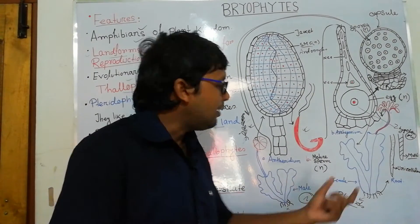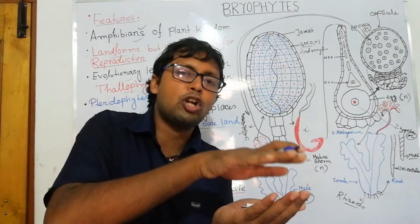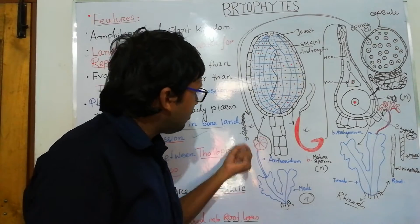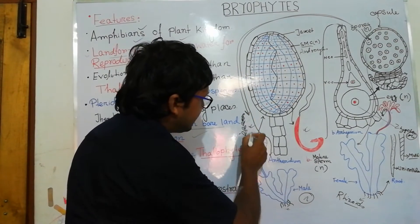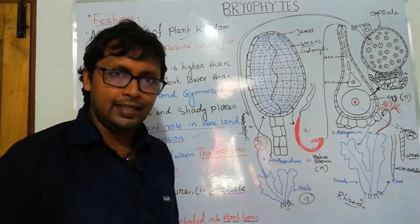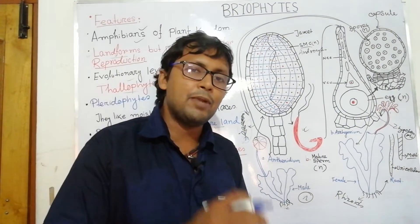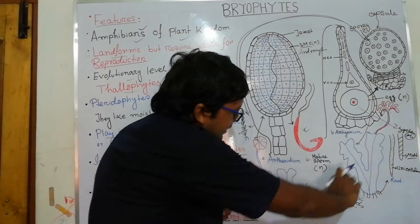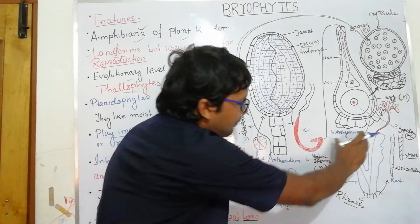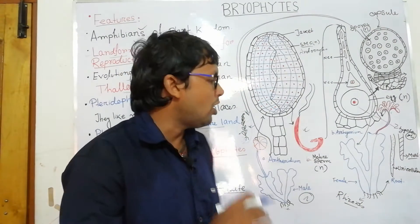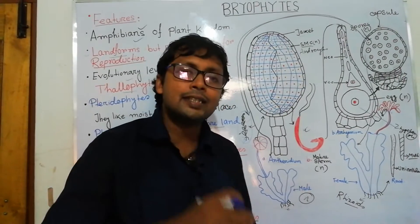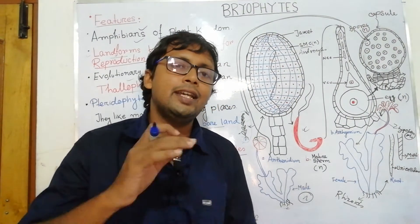Rhizoids arise from the ventral surface. Liverworts are dorso-ventrally flattened and attach to the substrate. In mosses, we see leafy structures — leaf-like appendages and stem-like appendages. These are all part of the gametophytic body, and all these photosynthetic structures have chloroplasts and chlorophyll.